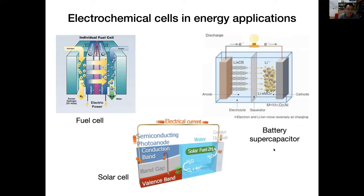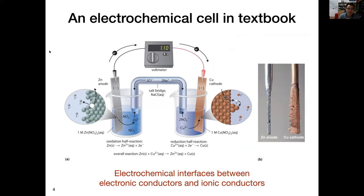For electrochemical cells we can find energy applications in fuel cells, batteries, supercapacitors, and solar cells. For computational chemistry, looking at these complicated energy devices, the key is the electrochemical interface — a place joined between an electronic conductor, which is our electrode material, and an ionic conductor, normally the electrolyte solution. Simulating this process at the interface is really one of the grand challenges in computational chemistry.